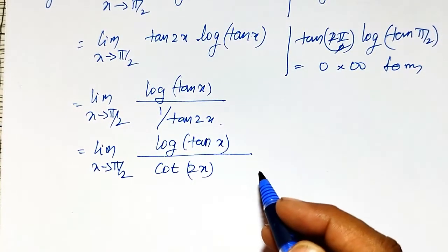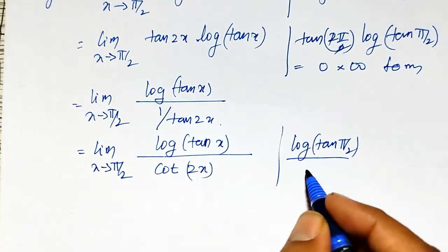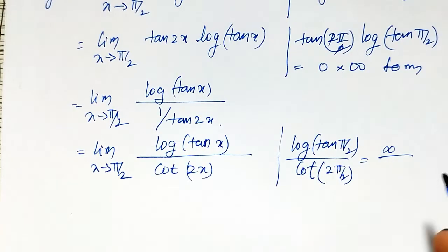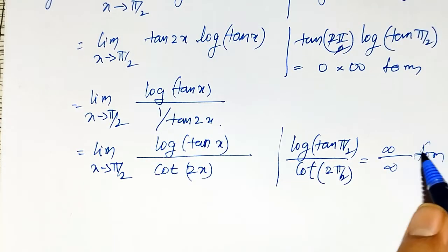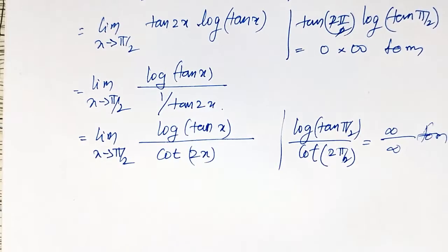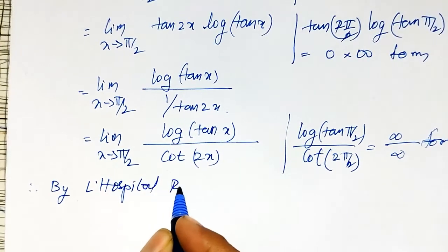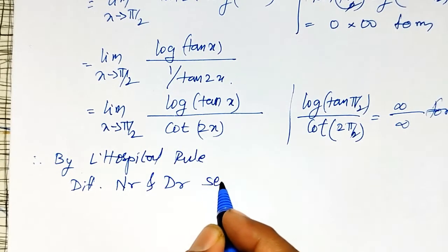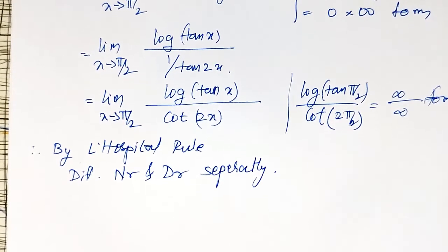Now it is in the ∞/∞ form. That is log(tan(π/2)) divided by cot(2·π/2), where log(tan(π/2)) is infinity and cot(π) is also infinity — so it is the ∞/∞ form. Now I can apply L'Hôpital's rule, which means differentiate the numerator and denominator separately, not together using the quotient rule.